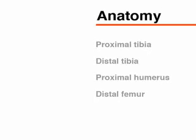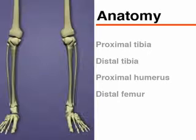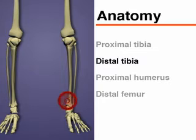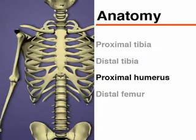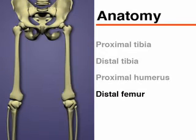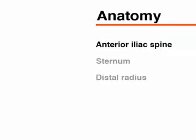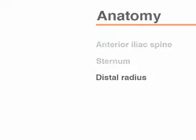Several anatomic sites may be used for intraosseous cannulation. The most commonly used include the proximal tibia, the distal tibia, the proximal humerus, and the distal femur. The anterior iliac spine is used less commonly. The sternum and distal radius have been identified for use in adults, but not children.